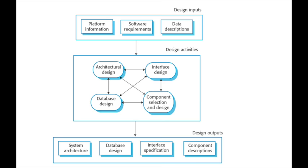The design process has a set of design outputs. These outputs might be an architectural specification, a component specification — that is a design specification, not a specification in terms of requirements — a database design, and an interface design.